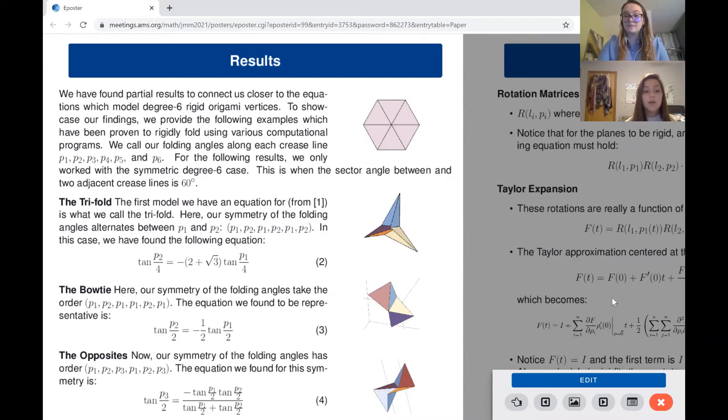Now the listed results correspond to the symmetric degree six origami vertex. The trifold has the symmetry where the folding angles alternate around the vertex like p1, p2, p1, p2, and so on. And the folding angles p1 and p2 are captured by equation two.